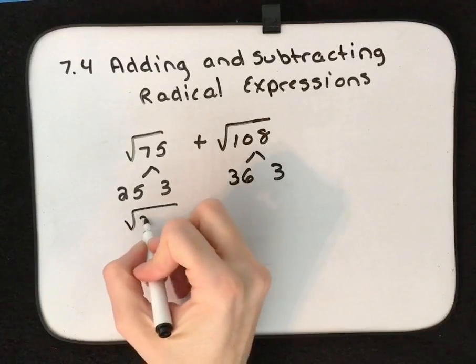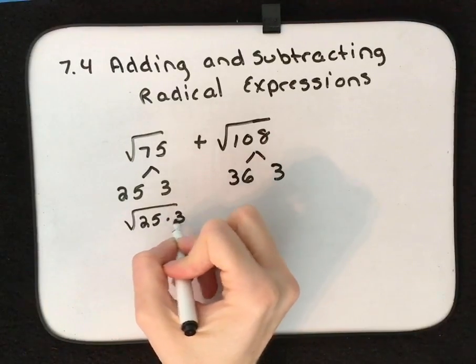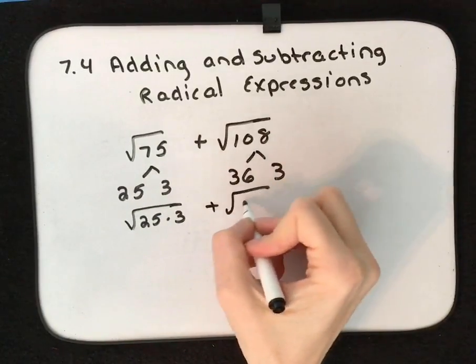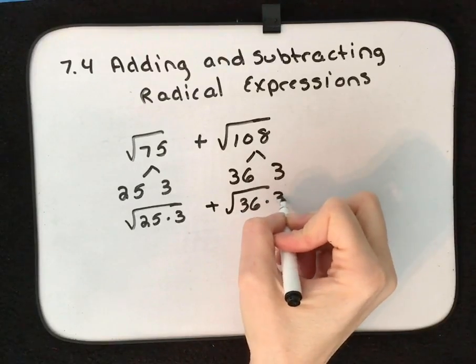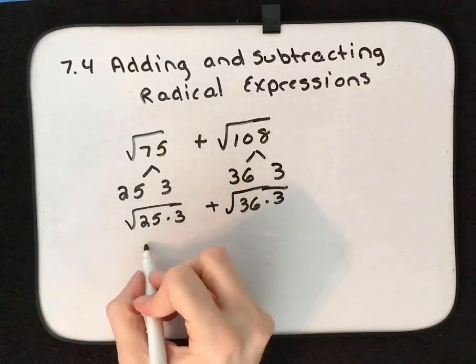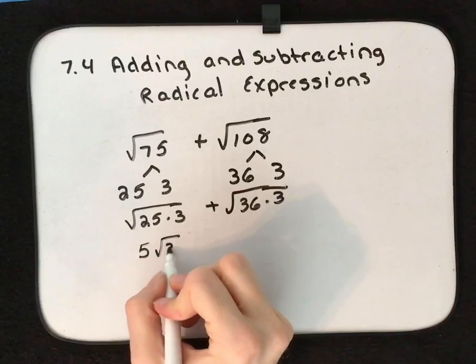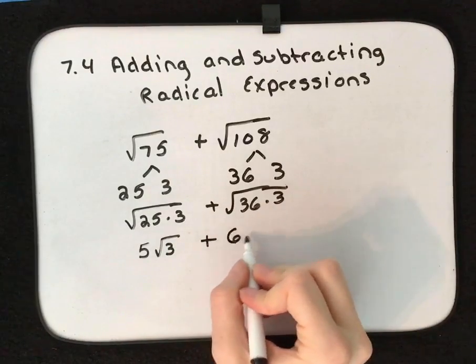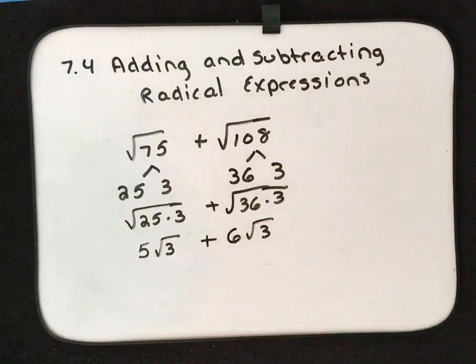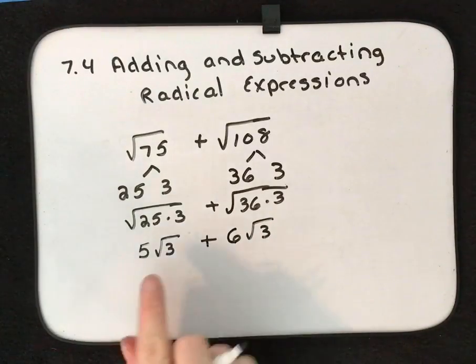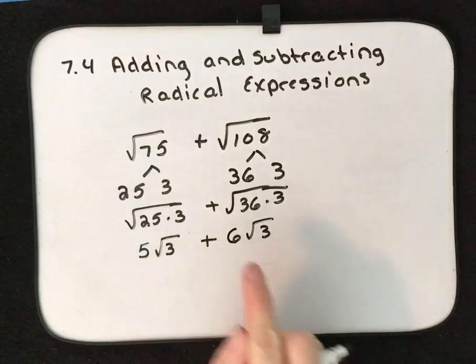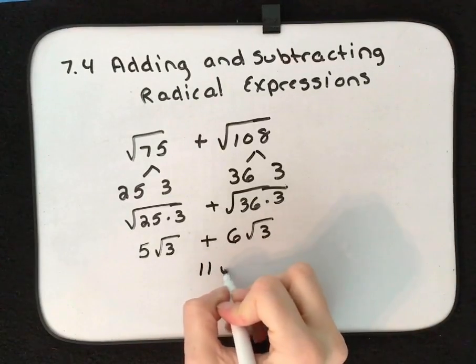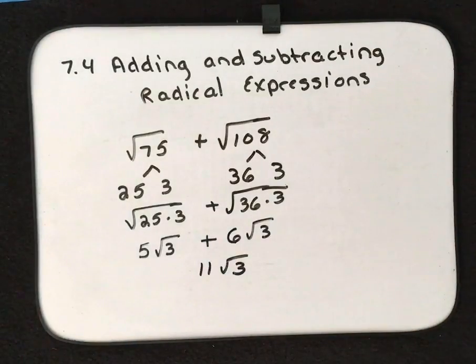So that would look like √(25 × 3) + √(36 × 3). Well, the square root of 25 is 5, and we still have √3. The square root of 36 is 6, and we still have √3. But that's okay because now we've made them like terms. So 5 + 6 gives us 11, and then we just carry along our √3.